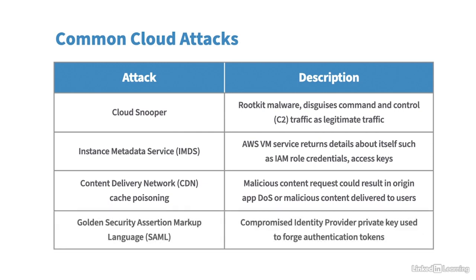We've also got golden SAML (Security Assertion Markup Language) attacks, which compromise an identity provider's private key that is then used by the attacker to forge authentication tokens. In public key cryptography, the public key can be shared with anyone, but the private key must be kept private. If someone gets hold of the private key, they can forge requests or transactions as if they were the legitimate key owner.